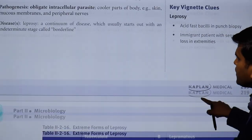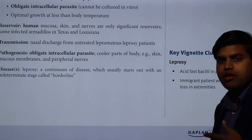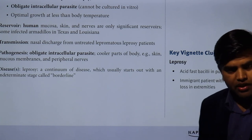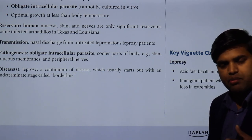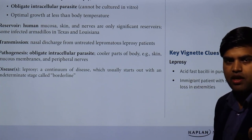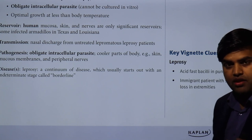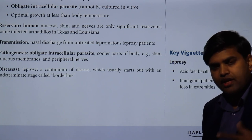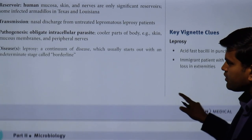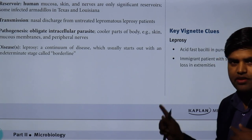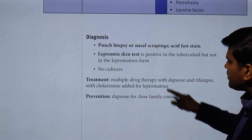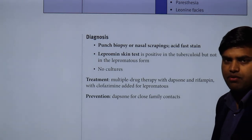In summary, for Mycobacterium leprae: if an immigrant patient from Africa or Asia presents with hypopigmented patches or loss of sensation in the extremities, think leprosy. Diagnosis is by nasal scraping or punch biopsy to find acid-fast bacilli, or PCR. Culture cannot be done routinely — experimentally it requires armadillos or monkey foot pads. Understand the two forms — tuberculoid (initial) and lepromatous (advanced) — and the corresponding treatment from the Kaplan book.